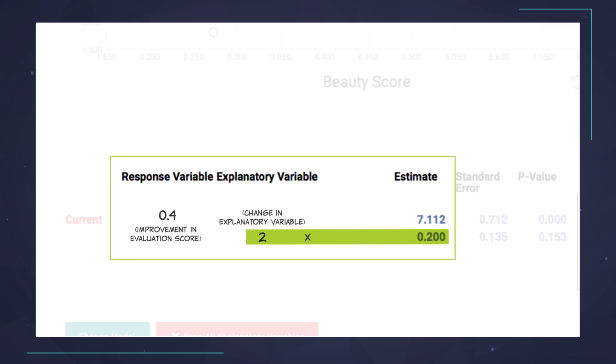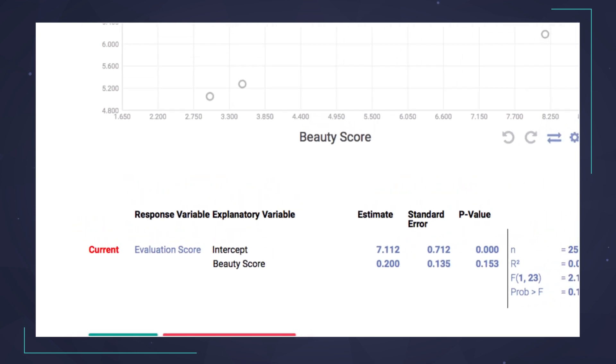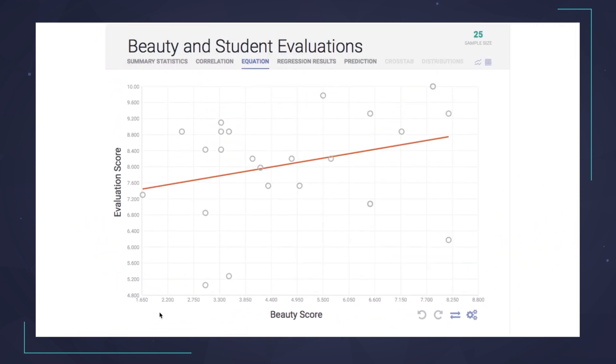We can do the same thing by reading the change off the regression line. If we start at 2, we see an evaluation score of about 7.5. Then, if we move to 4, we see an evaluation score just a little under 8. That 0.4 difference is the same as what we calculated before with the line formula.